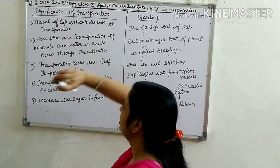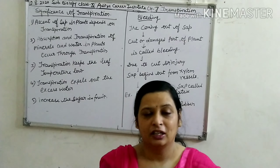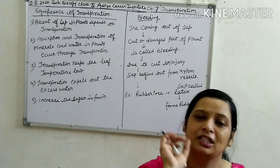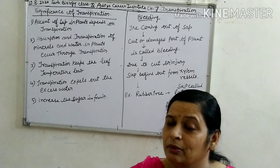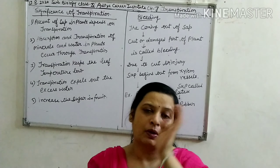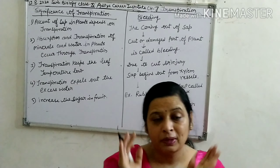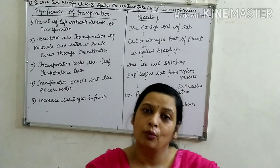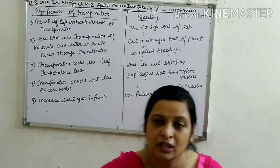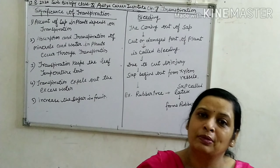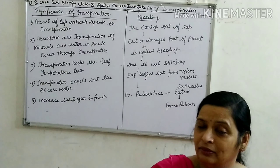Ascent of sap in plants depends on transpiration. Plants have a process we call the ascent of sap — the upward transfer of water and minerals to different parts of the plant. This process is called the ascent of sap, and it most probably depends on the rate of transpiration.